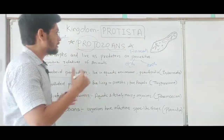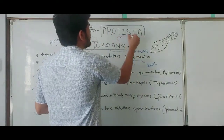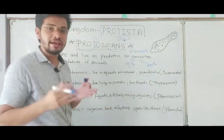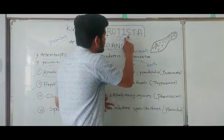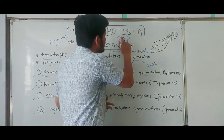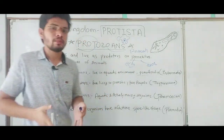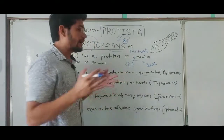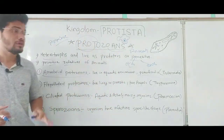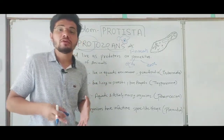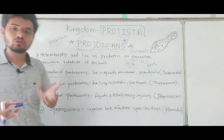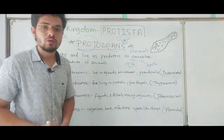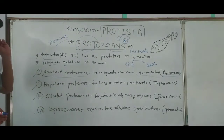By using pseudopodia, amoeboid protozoans engulf food material inside their cell. They have an amoeba-like structure, and when food is nearby, they spread their pseudopodia around it and engulf it into the cell. This is how they intake food. The example of amoeboid protozoans is Entamoeba.